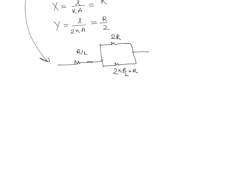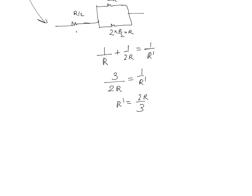The resistors 2R and R are in parallel. Computing their equivalent: 1/R' = 1/R + 1/(2R) = 3/(2R), so R' = 2R/3. The circuit now simplifies to the resistor R/2 in series with the parallel equivalent of 2R/3.